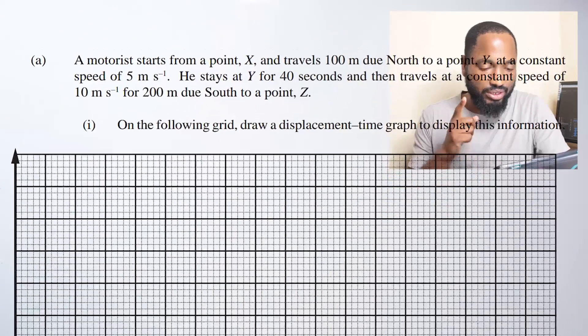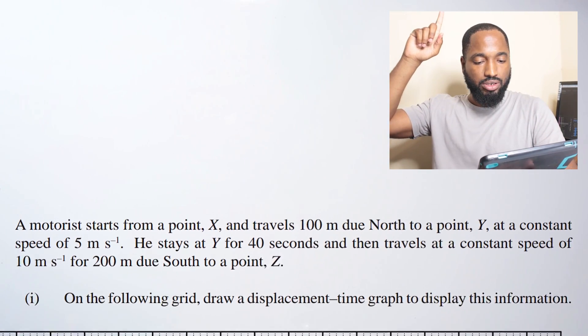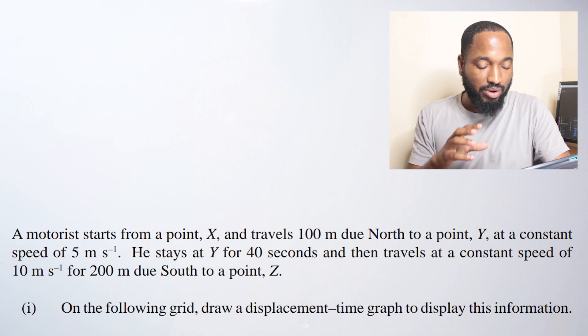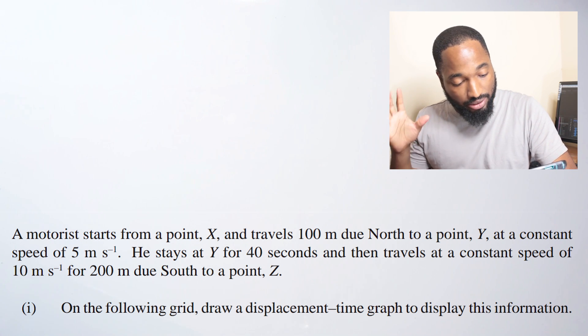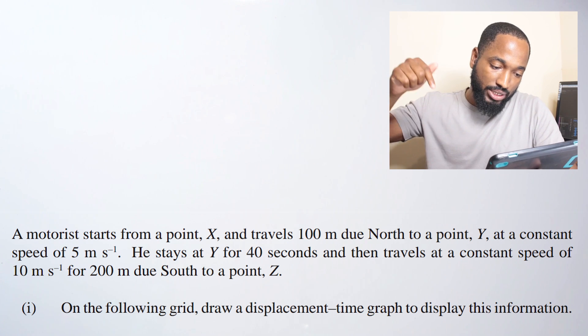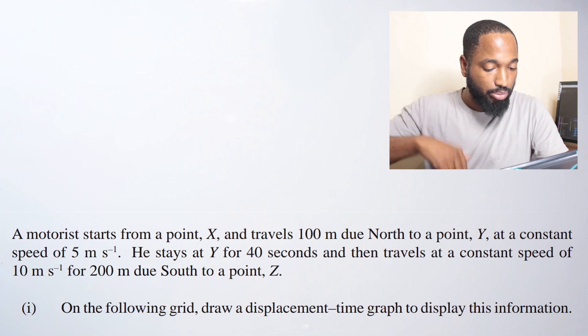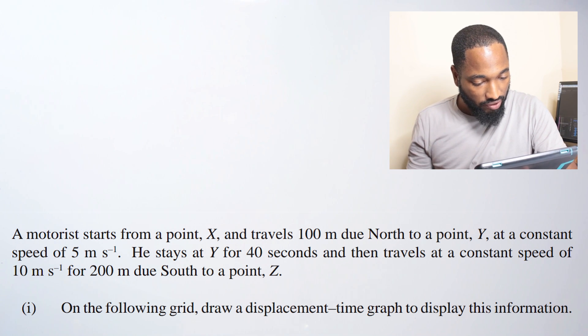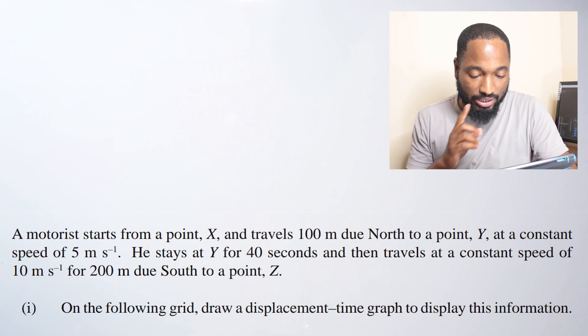Part a: The motorist starts from point X and travels 100 meters north due to point Y at a constant speed of 5 meters per second. He stays at Y for 40 seconds, then travels at a constant speed of 10 meters per second for 200 meters due south down to point Z. We need to draw a displacement-time graph to display this information.